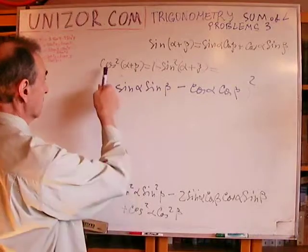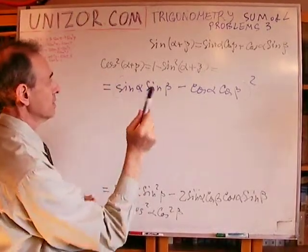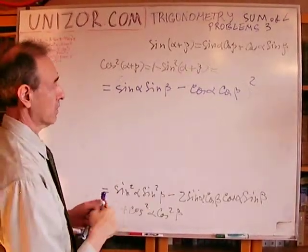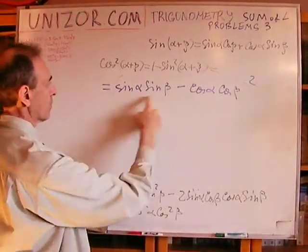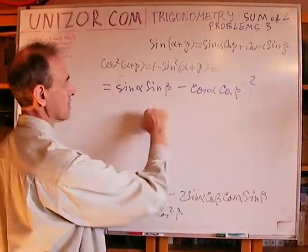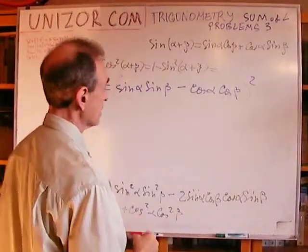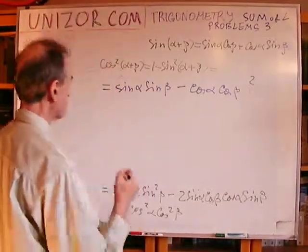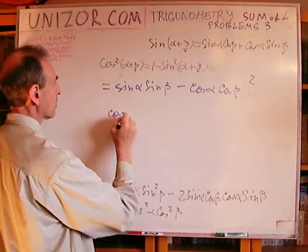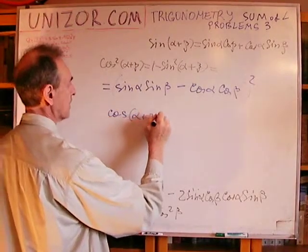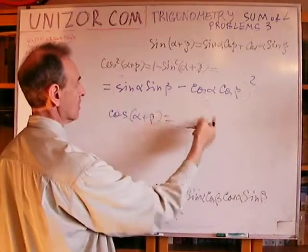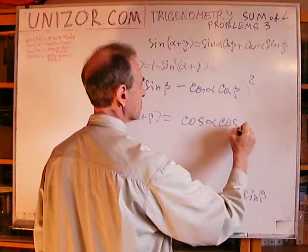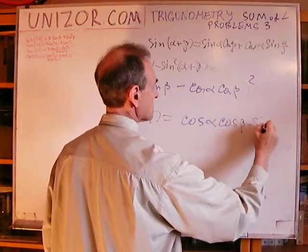You obviously recognize this as (sine alpha sine beta minus cosine alpha cosine beta) squared. So basically that's it. The only problem is this is a square. The real formula is either (sine minus cosine) or (cosine minus sine) — it doesn't matter which way since it's squared. So cosine of (alpha + beta) equals either sine minus cosine or cosine minus sine.